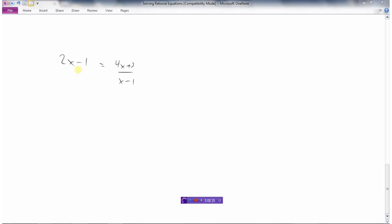And in this final example here, we got 2x minus 1 equals 4x plus 3 divided by x minus 1. So our non-permissible values would be x equals 1. x cannot equal 1 because 1 minus 1 would be 0. Can't do that. We'll make sure at the end that our answer is not 1.